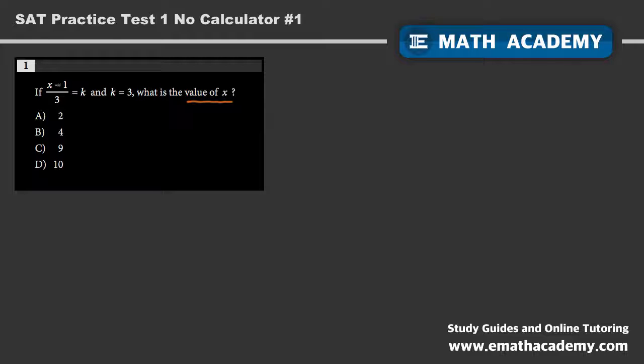We need to find x in this equation. They give us k is equal to 3, so let's just plug that in. And we've got x minus 1 divided by 3 is equal to k, which was 3.